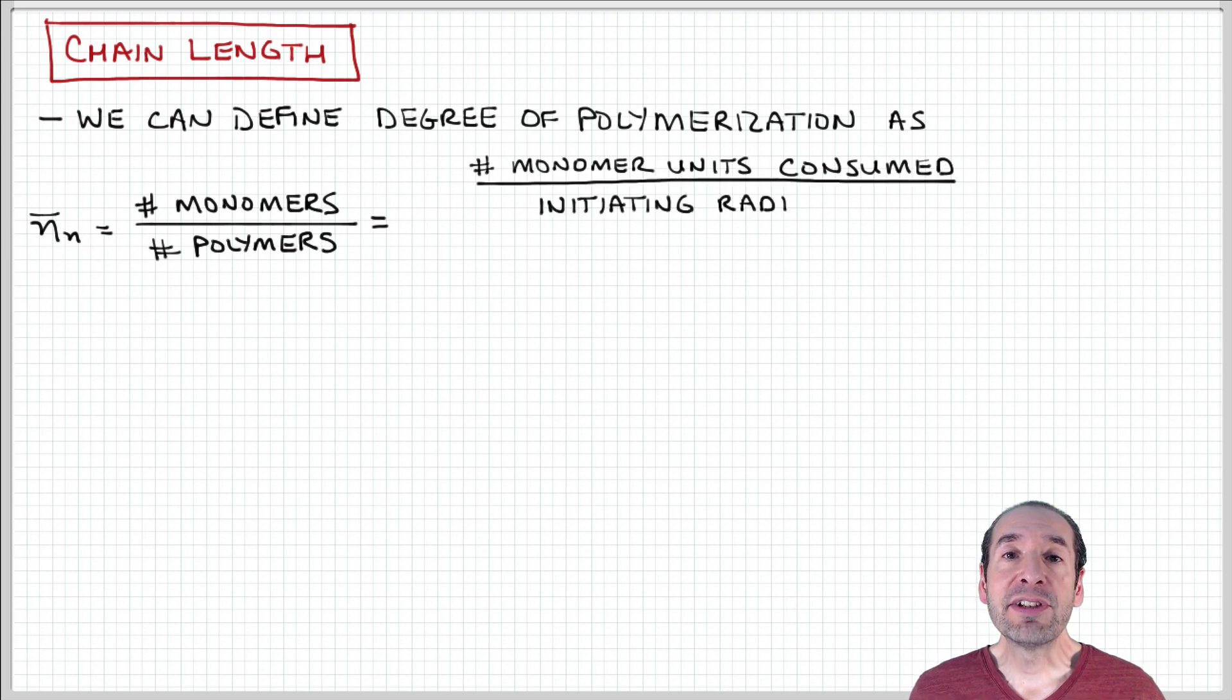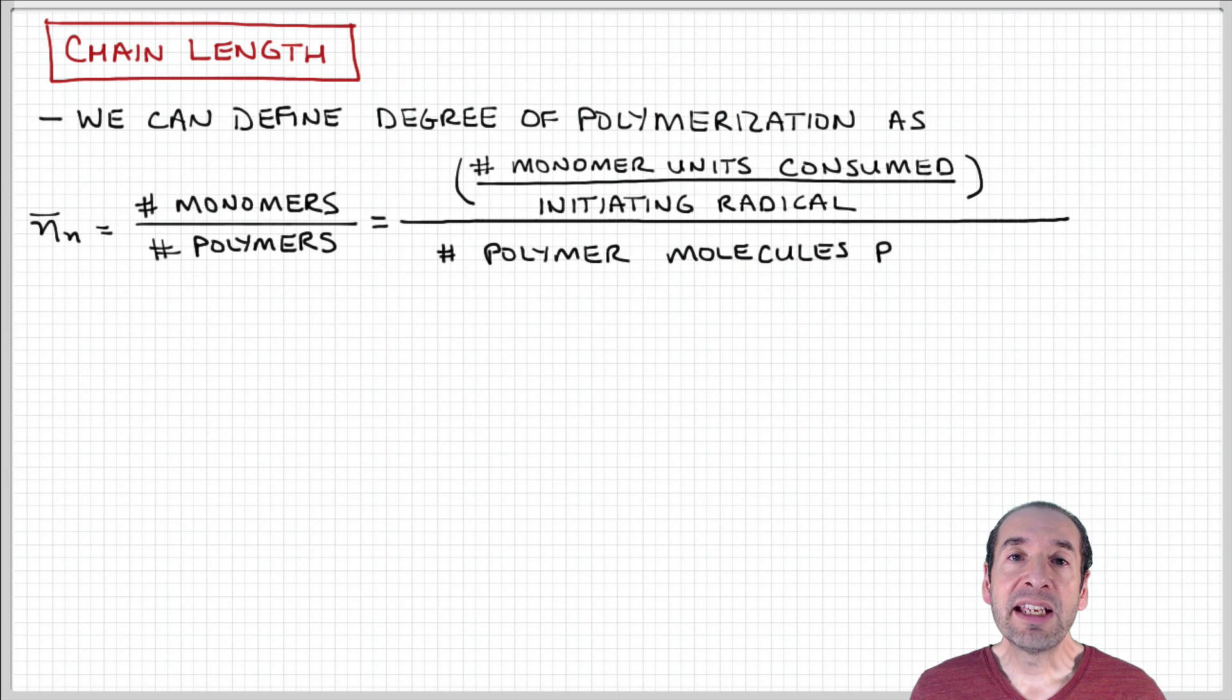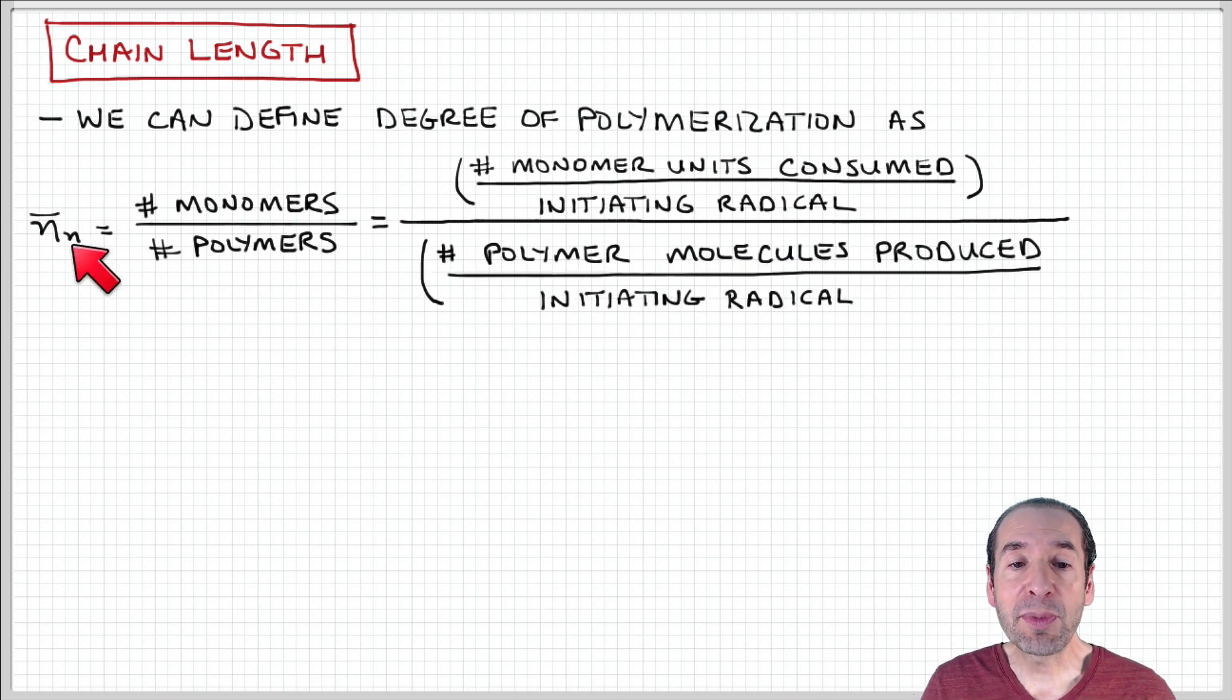The first step to do that is to define a degree of polymerization. A number average degree of polymerization is just a ratio of the number of monomers to the number of polymers, or the average number of monomers that are incorporated in each polymer molecule.